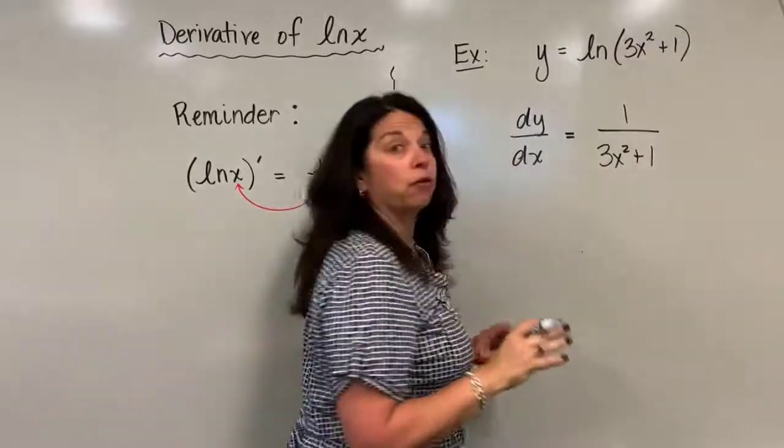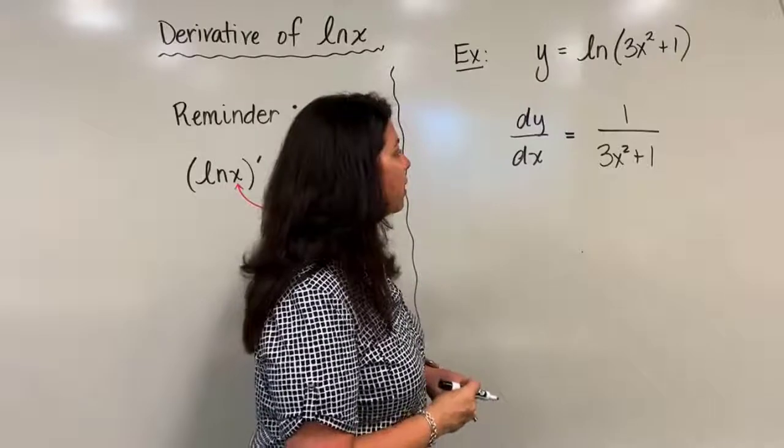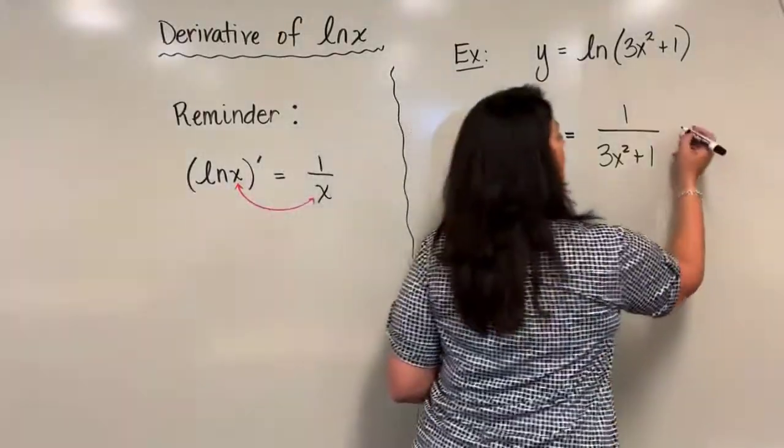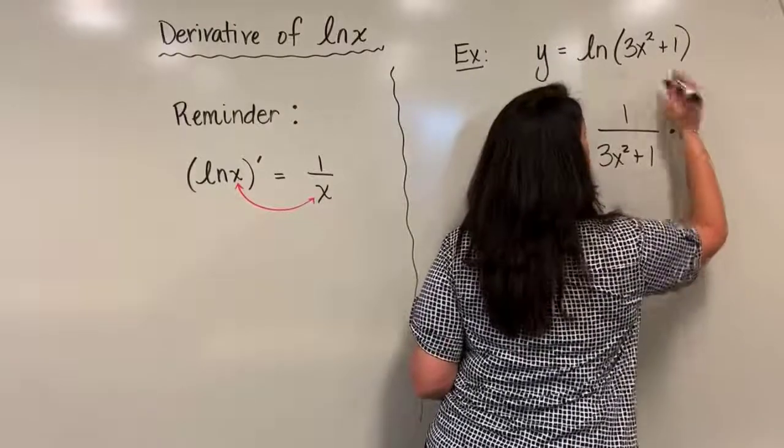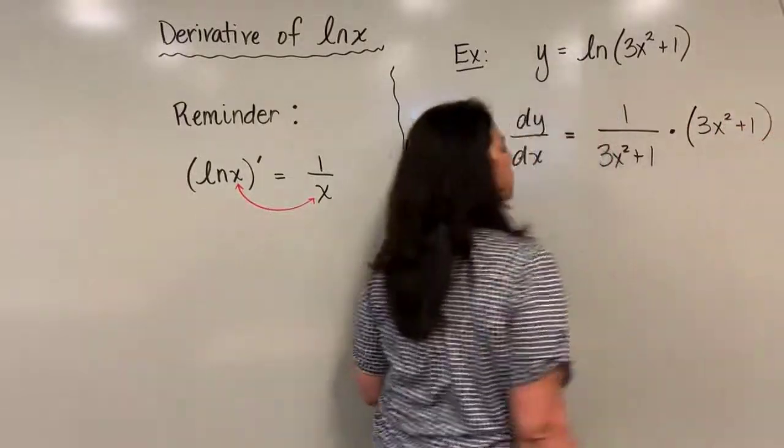So now for the outside function's derivative, I simply have 1 divided by 3x squared plus 1. But via the chain rule, I have to have the second part. I now need to multiply by the derivative of that inside function—I can't forget that second piece.